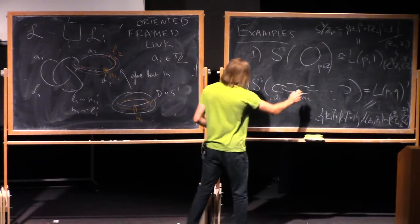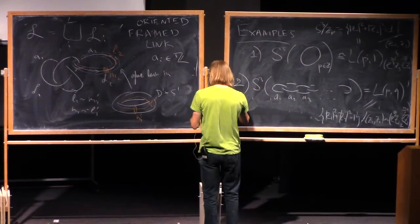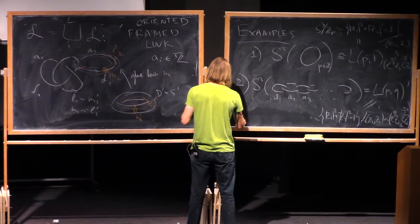And for Z2 it should be minus 2 pi i Q divided by P Z2, where P and Q are related to the framings A1, A2, A3 and so on by the following continuous fraction decomposition.